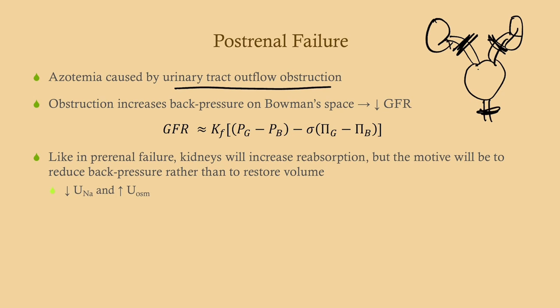An obstruction at the urethra prevents urination, so urine builds up in the bladder and that pressure transmits back to the nephron. Obstruction increases back pressure on Bowman's space. Recall the GFR equation — the hydrostatic pressure in Bowman's space is ordinarily approximately zero, but as it builds up, that term increases and GFR goes down.